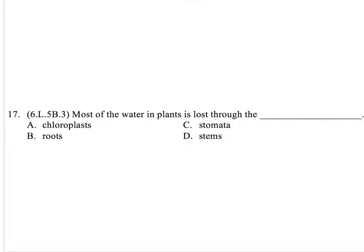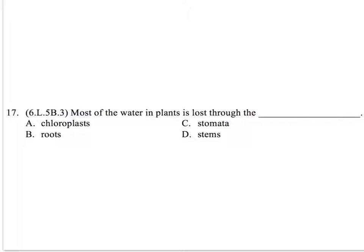Question 17. Most of the water in plants is lost through the: A. Chloroplast. B. Roots. C. Stomata. D. Stems.